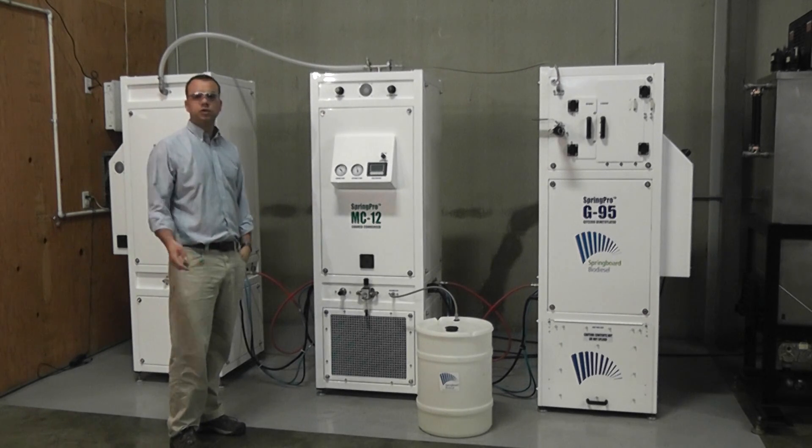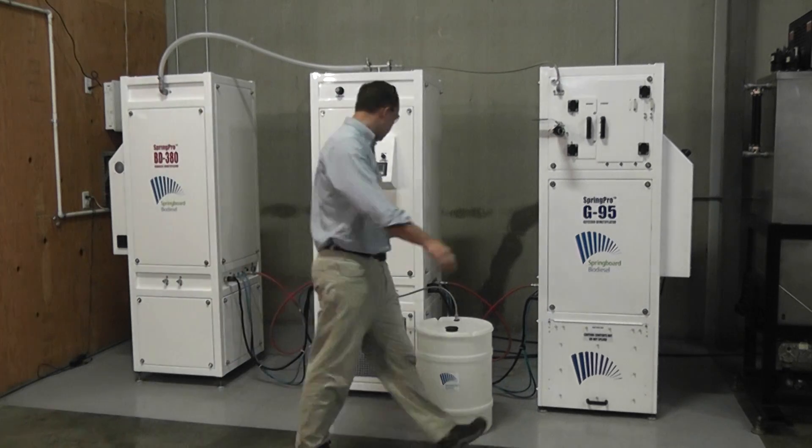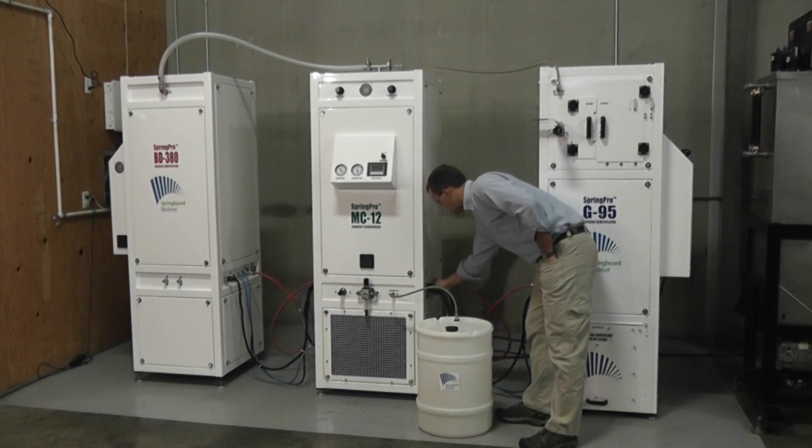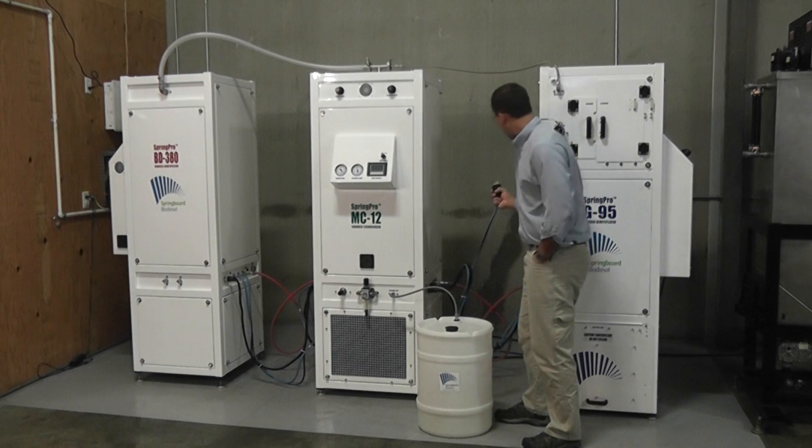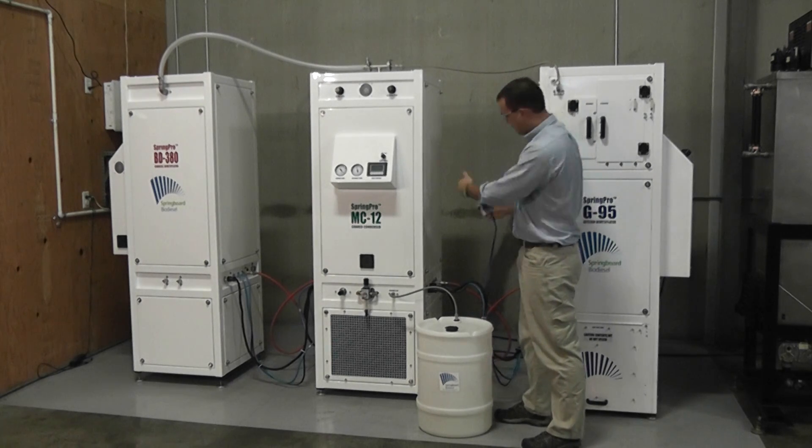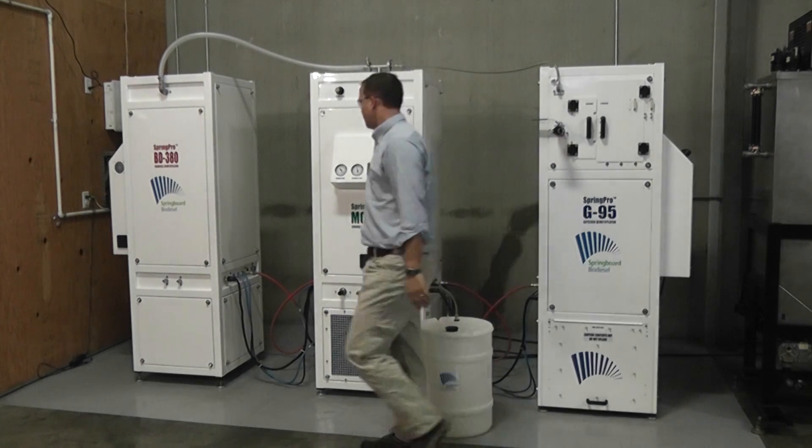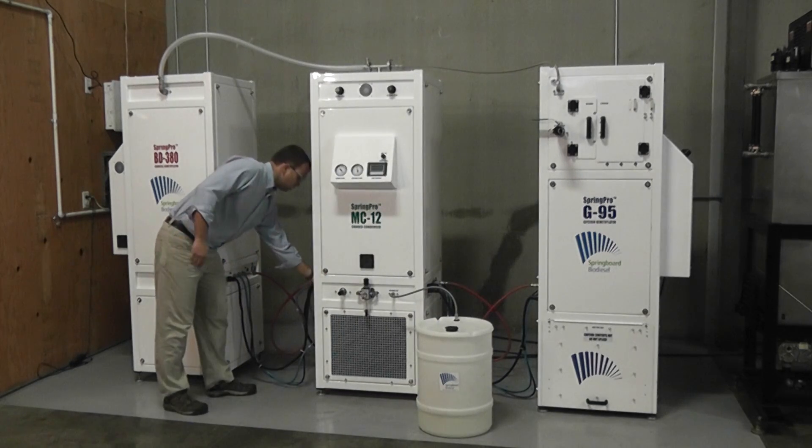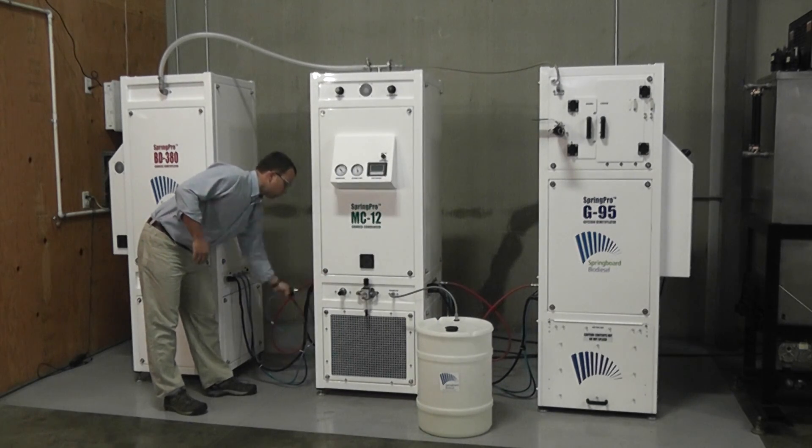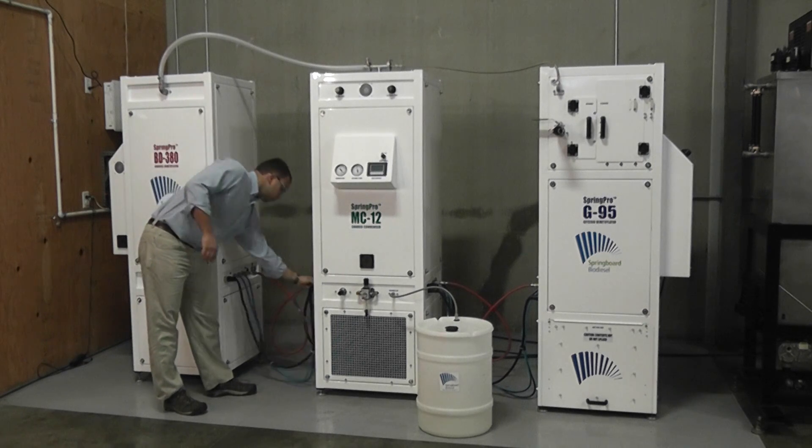Basically, you only have to plug in one set of cords and have one air hose. You'll see here, for instance, this is the 220 line from the G95, which plugs into the MC12. And likewise here from the BD380, it's also deriving 220 volt power from the MC12 as well.